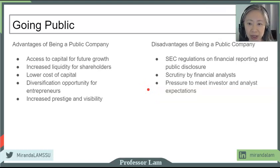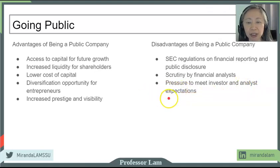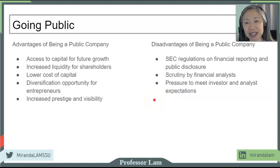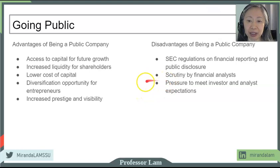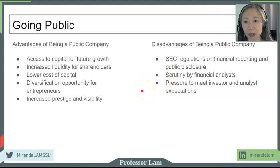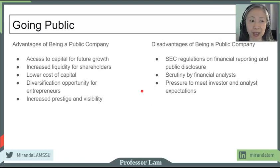Coming along with that is the pressure to meet quarterly estimates — and it's not up to the firm to make projections. Financial analysts will make their own projections. Those of you who want to become a financial analyst or a CFA, that's really our job to analyze the firm and provide our own estimate about its future. And once you put an estimate out there, company executives will feel obliged to meet those estimates because not meeting an analyst's estimates can result in a quite significant decrease in stock prices.